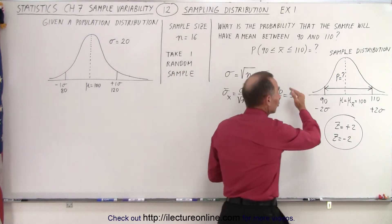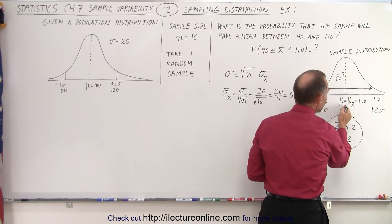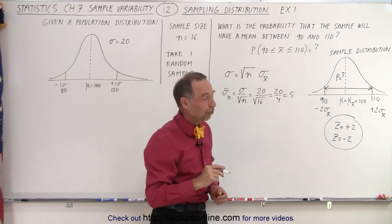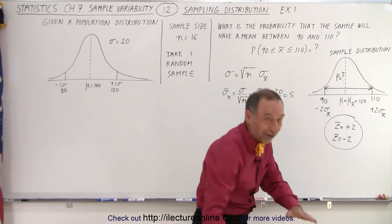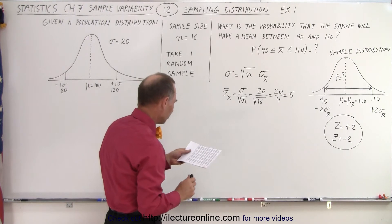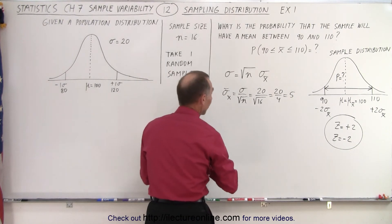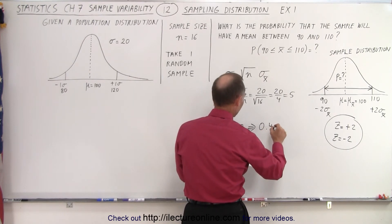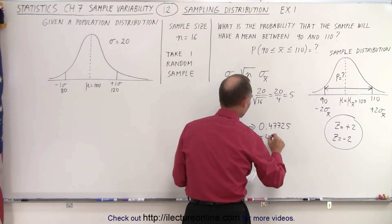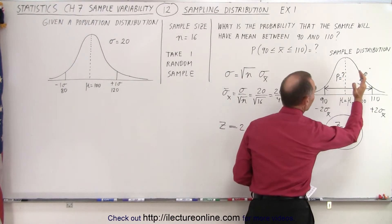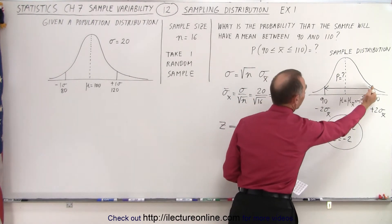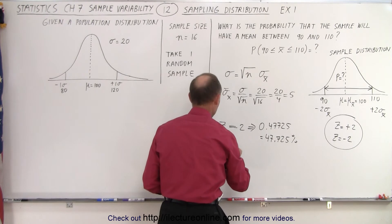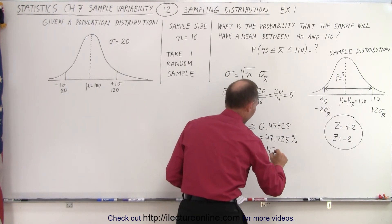Now we use a table to find what percentage of the total distribution falls between the mean plus two standard deviations and the mean minus two standard deviations — noting this is the standard deviation of the sample mean distribution, not the population. Looking up z equals 2, I get 0.47725, which is 47.725 percent. That means from the mean to plus two standard deviations is 47.725% of all probabilities. From the mean to negative two sigma is also 47.725%, corresponding to z equals negative 2.